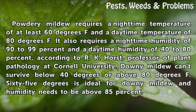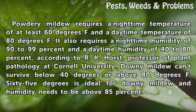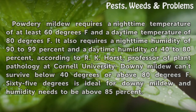According to R.K. Horst, professor of plant pathology at Cornell University, downy mildew can't survive below 40 degrees or above 80 degrees Fahrenheit. 65 degrees is ideal for downy mildew, and humidity needs to be above 85 percent.